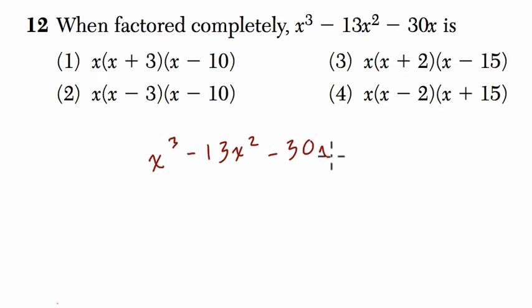Now, we have x to the third minus 13x squared minus 30x. Well, one of the first things I notice is that each of these terms has a factor in common. Each of these terms has one factor in common. That factor is x.